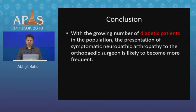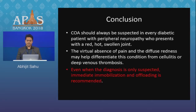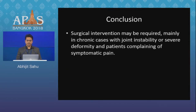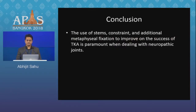To conclude, with the growing number of diabetic patients, the presentation of symptomatic neuropathic arthropathy is likely to become more frequent. It should always be suspected in every diabetic patient with peripheral neuropathy who presents with a red hot swollen joint. Even when the diagnosis is only suspected, immediate immobilization and offloading is recommended. Surgical intervention may be required in chronic cases with joint instability or severe deformity. The surgeon must ensure that the destructive phase of the disease has ceased before surgery is attempted, and the patient must be fully aware of the risk of failure. Focus should be directed at alignment and ligament balancing, and the use of stems, constrained implants and additional metaphysial fixation to improve the success of TKA is paramount.